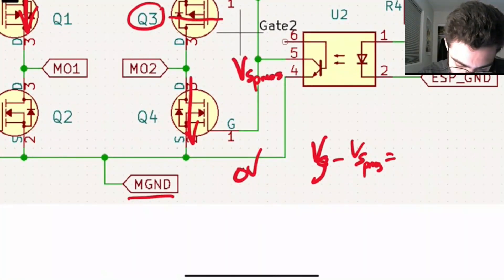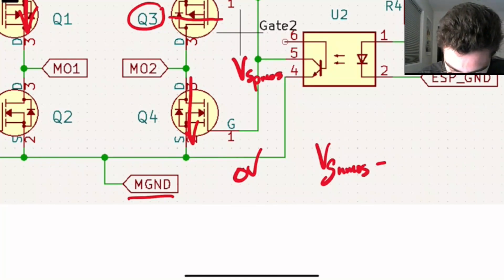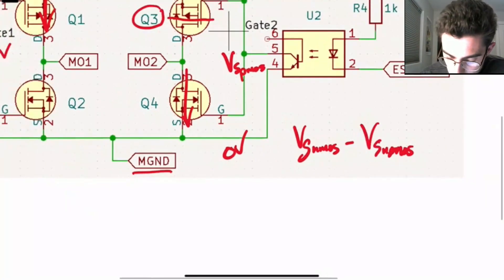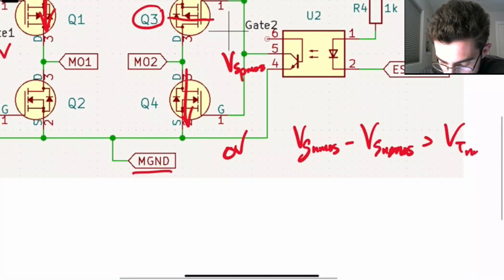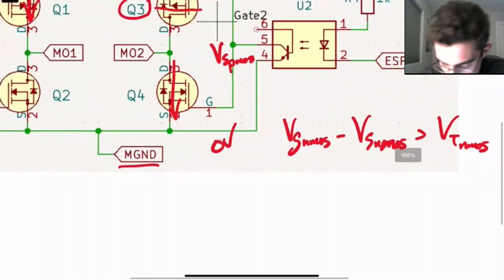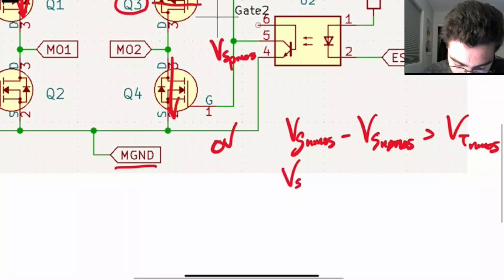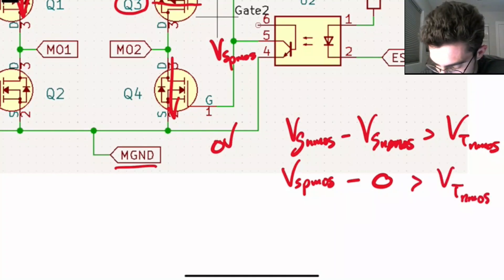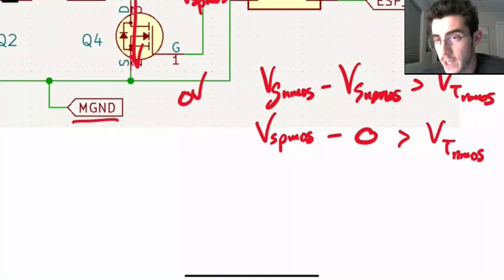Vg of the NMOS minus Vs of the NMOS needs to be greater than the threshold of the NMOS. So Vg, as we know, is going to equal the Vs PMOS minus 0, because the source of the NMOS is 0, which is greater than some threshold of the NMOS. And then it'll conduct.